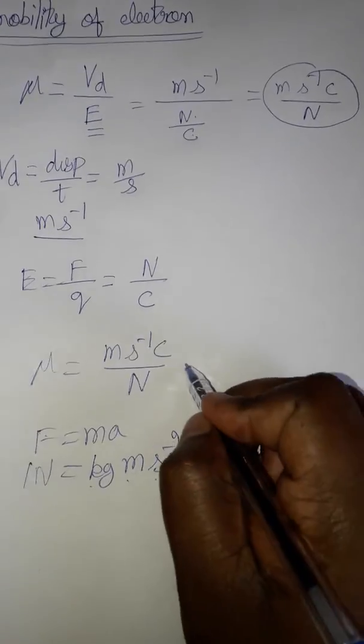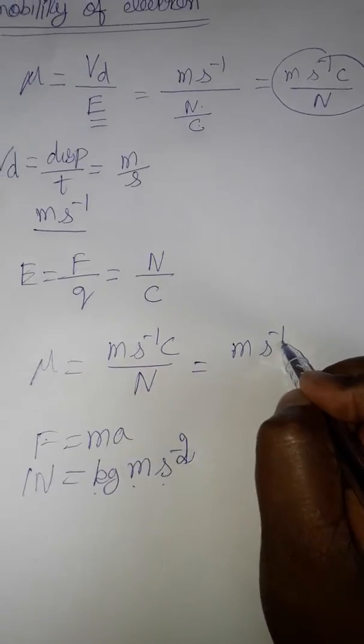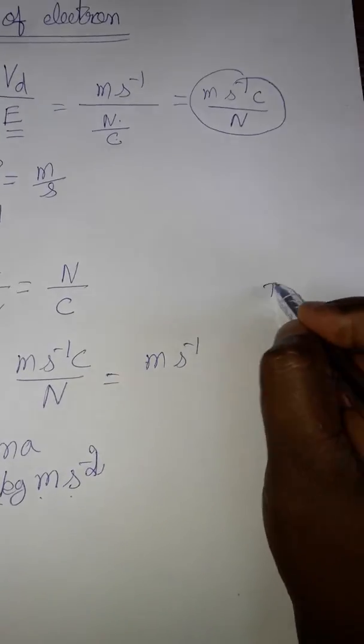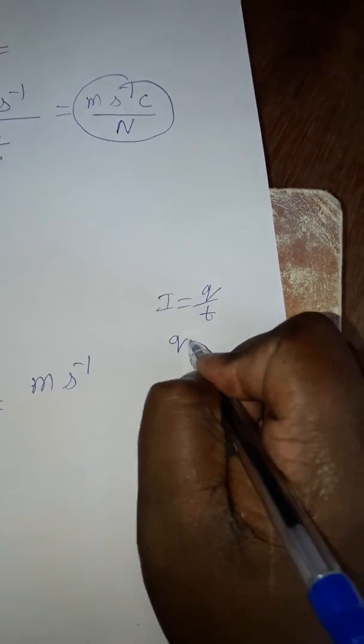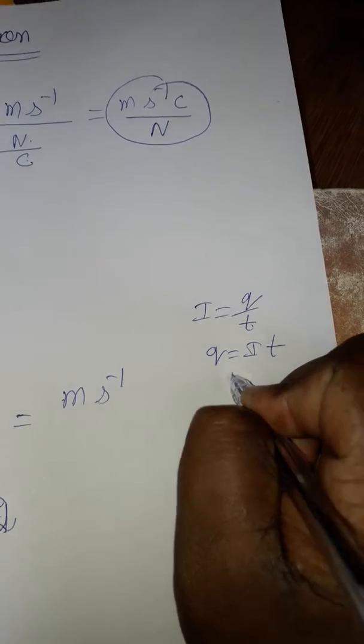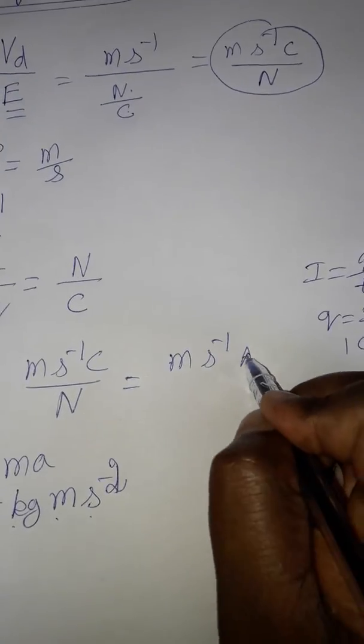So here I am substituting what is one Newton. Meter second inverse coulombs. Current is equal to charge by time, that means charge is equal to current into time. So one coulomb is equal to ampere into second.